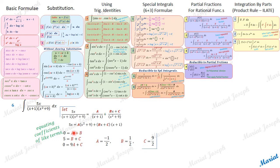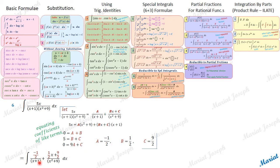We are now in a position to rewrite this integrand into two terms using the newly calculated A, B, and C. The integrand is rewritten as: −1/2 upon (x+1), plus (½x + 9/2) upon (x²+9).